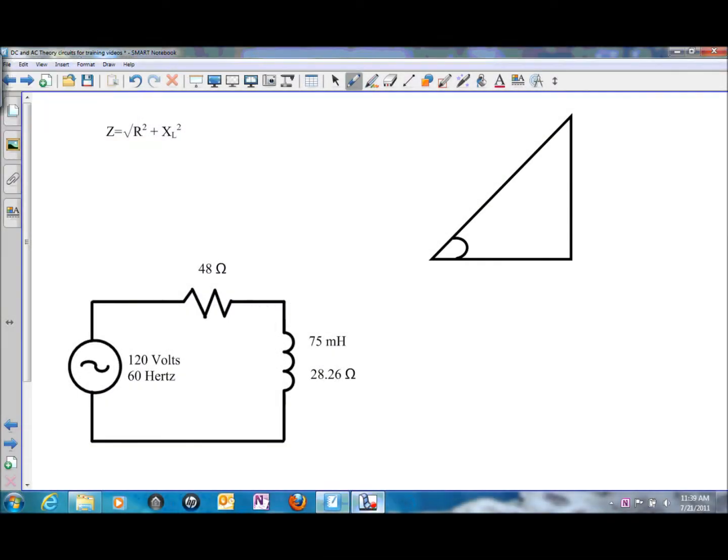In this presentation, we're looking at solving for impedance. Impedance would be the total opposition to current flow in an AC circuit.